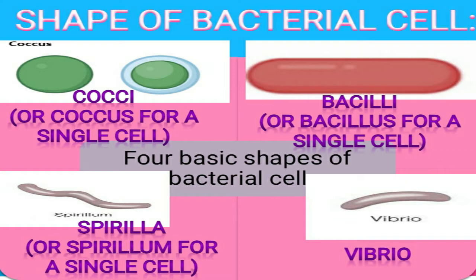As you know, bacterial cells divide by binary fission and produce daughter cells. They divide in different planes — either the X plane, Y plane, or Z plane. Based on the plane of division, they show different kinds of arrangements.